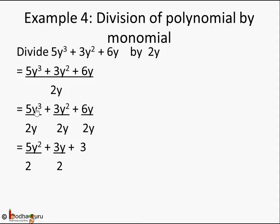There were three y's here, y times y times y. One of them gets cut, so you're left with 5y². Five by two, you cannot cut anything. Same thing for 3 by 2: y² by y, so y times y divided by y, one of the y gets cut, only one y is left. Same thing here, 6 divided by 2 is 3, and y and y get cancelled.